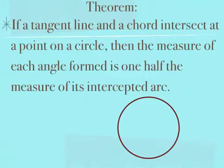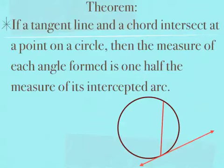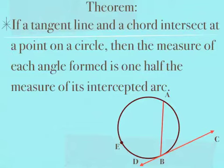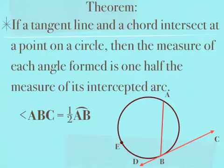A picture to go with this theorem: on my circle, I have a chord and a tangent line that intersect on my circle. I'm going to go ahead and name my points. This theorem states that if I wanted to find the measure of angle ABC, I could take one-half the measure of the intercepted arc. The arc intercepted by angle ABC is arc AB, so angle ABC equals one-half arc AB.